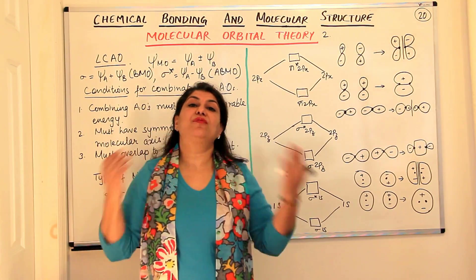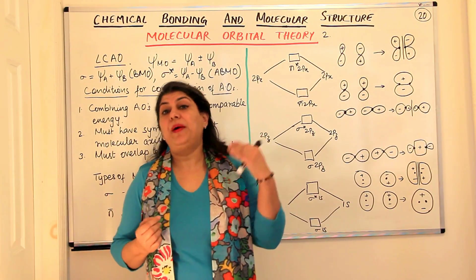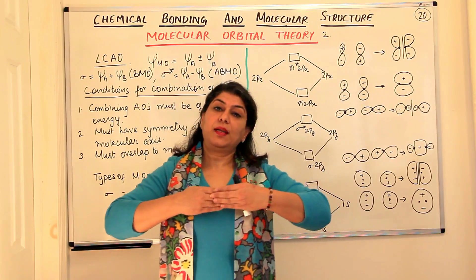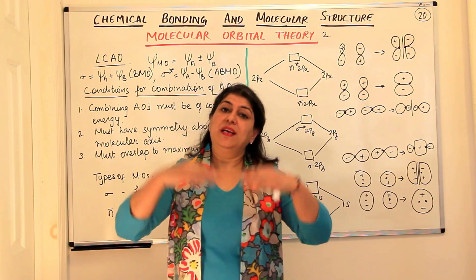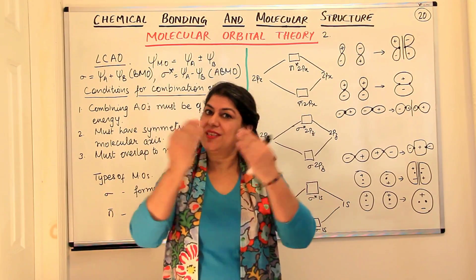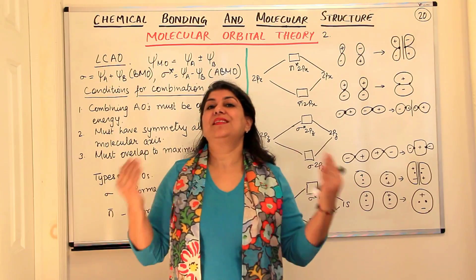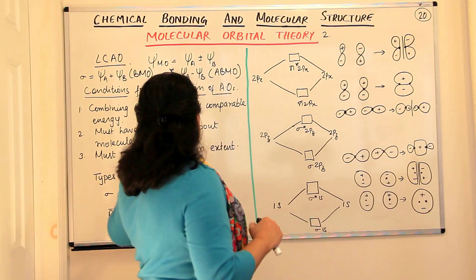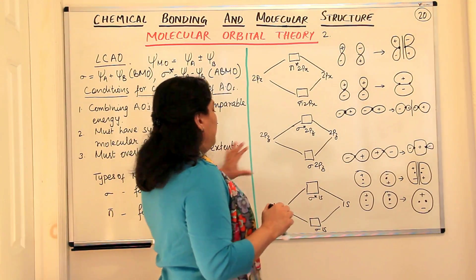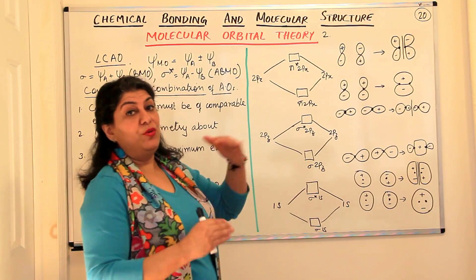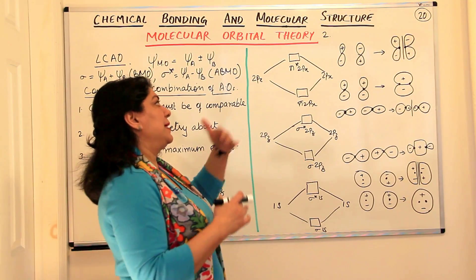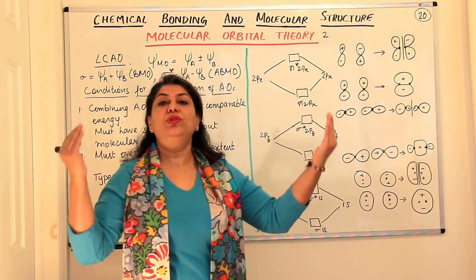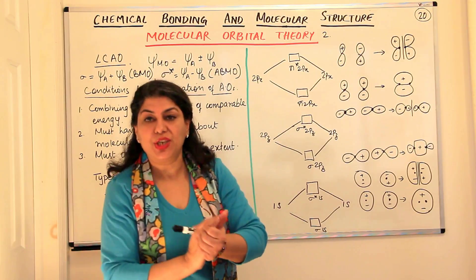Therefore, py and px result in the formation of pi bonds. And if you remember, a sigma bond is the first bond; the pi bonds are the second and third bonds. In the molecular orbital theory, however, we do not take them as second and third bonds—we have the entire molecule with both atoms merging completely.